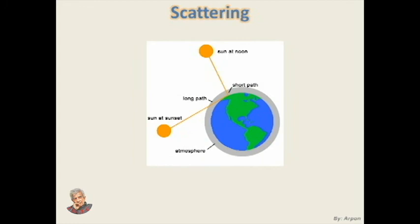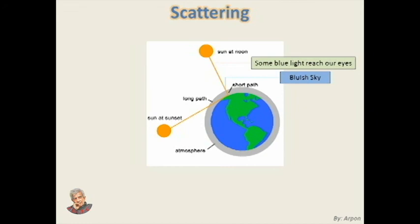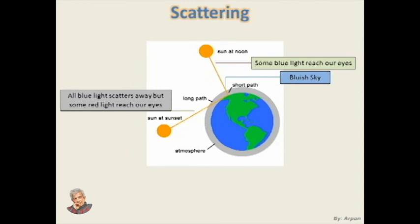During noon, sunlight needs to travel a short path to reach our eyes. Though blue light is scattered more, some blue light is still able to reach our eyes before it has been scattered away, so we see a bluish sky during noon. On the other hand, during sunset or sunrise the path becomes longer. As a result, all the blue light scatters away before it reaches our eyes. But since red light is scattered less than blue light, some of it can travel all the way and reach our eyes, which makes us see a reddish sky at that time.